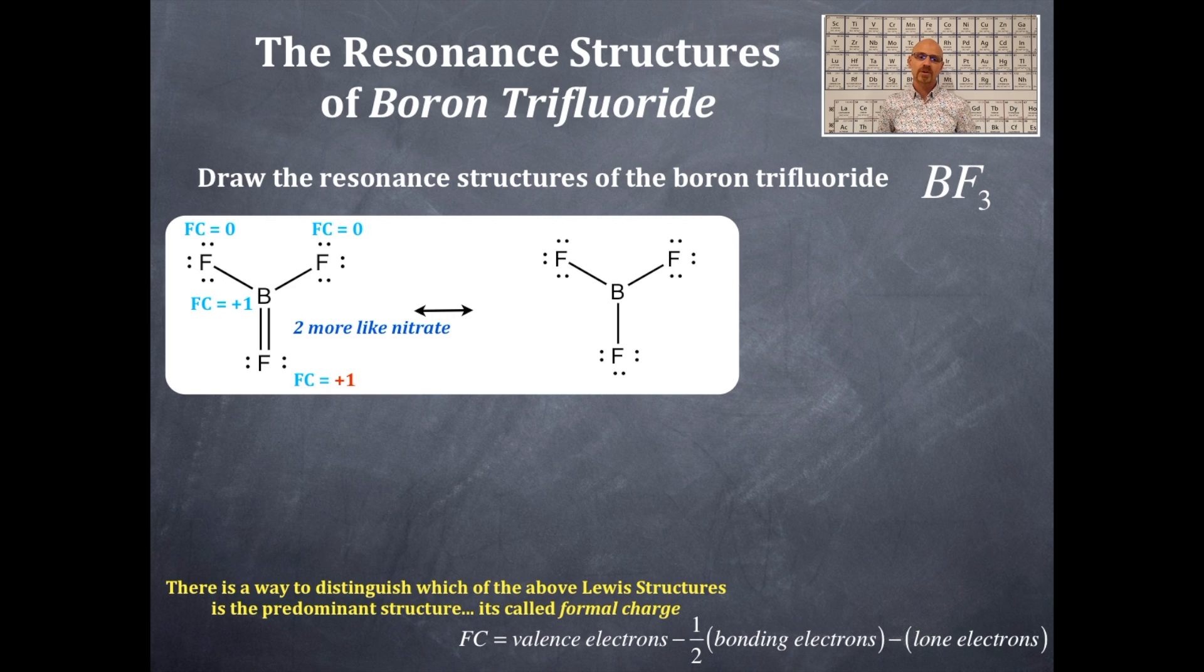So let's determine the formal charge of the other right-hand Lewis dot structure. We've got a formal charge on that upper left-hand fluorine at zero and the right-hand fluorine at zero. The lower fluorine at zero and the boron at zero. So this one is the preferred, the dominant resonant structure. And this is why.